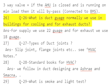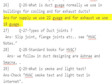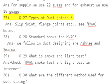Q26: What is duct gauge normally used in buildings for cooling and for exhaust ducts? Answer: For supply we use 22 gauge and for exhaust we use 18 gauge.